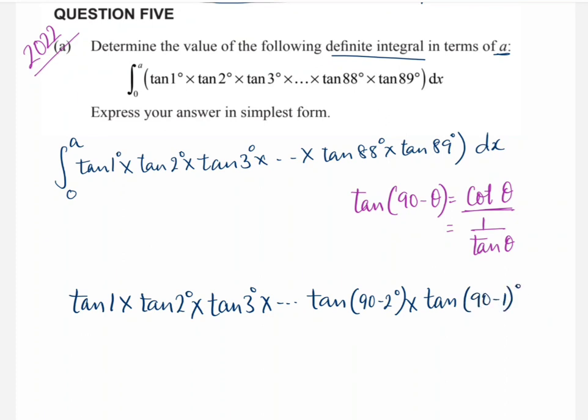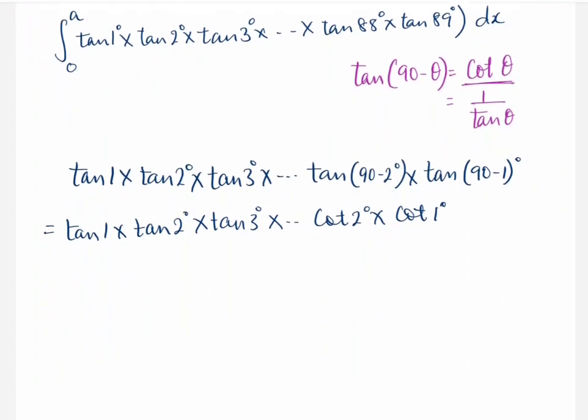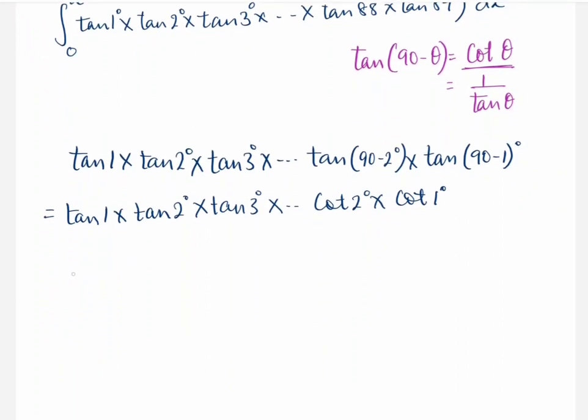Right, now this can further be written as tan1° × tan2° × tan3° ... so on, cot2° × cot1°. Right, and when we convert these cots, so if I convert cot to tan, it's going to be 1 over tan degrees.